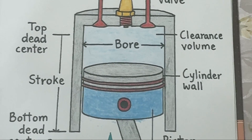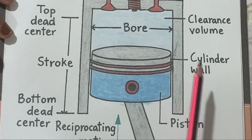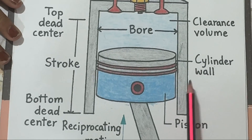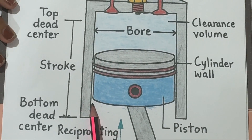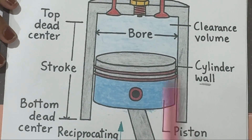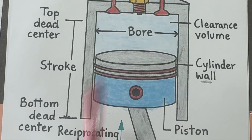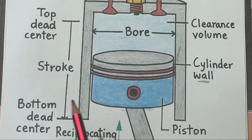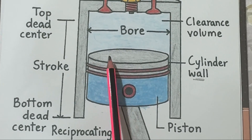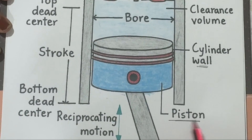The inner surface of the cylinder is called the cylinder wall, and it must be perfectly smooth so that the piston can move freely without losing pressure.